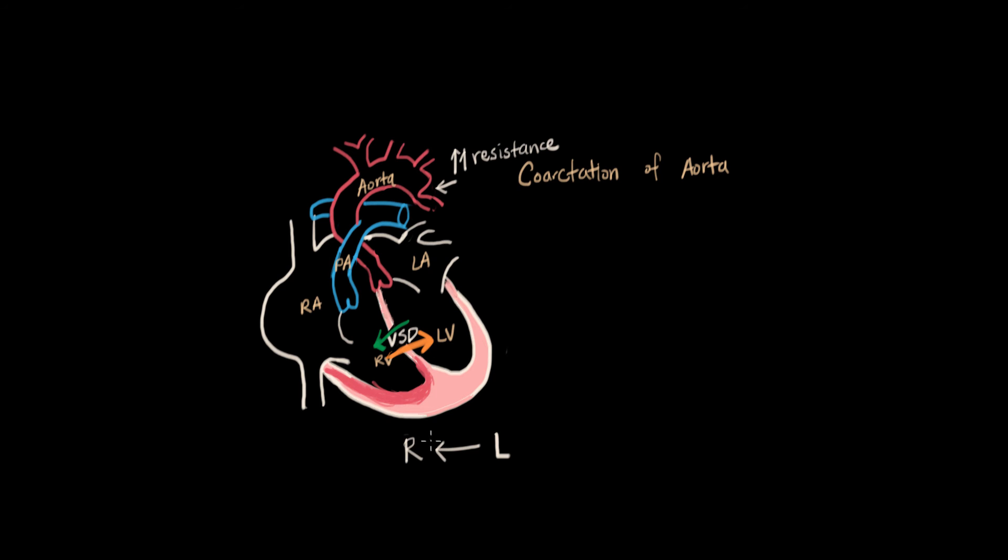So instead of our left-to-right shunt, now we're going right-to-left. Because the right ventricle now has the greater power. This is a phenomenon of the reversal of the shunt now going right-to-left because the right ventricle has grown so big. It's what we call Eisenmenger. And this usually happens around age five or six, depending on the child and what their actual structure looks like.